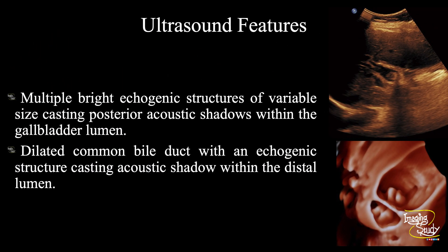So, in summary, multiple bright echogenic structures of variable size are seen within the gallbladder lumen casting posterior acoustic shadows. The common bile duct is dilated with an echogenic structure casting posterior acoustic shadow within the lumen, causing proximal dilatation of the common bile duct and the intrahepatic biliary tree. These features conclude it as a case of cholelithiasis with choledocholithiasis.